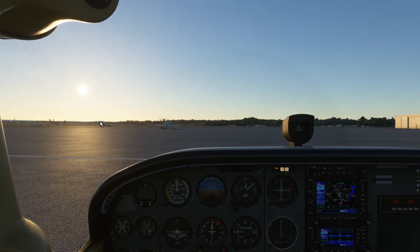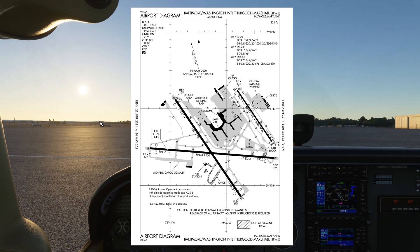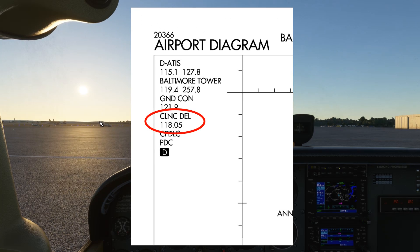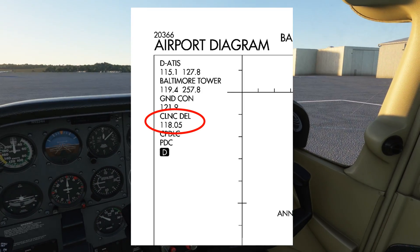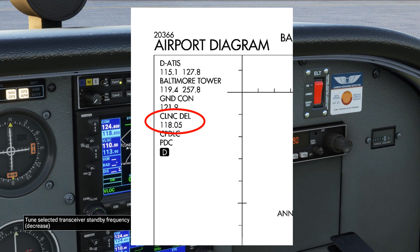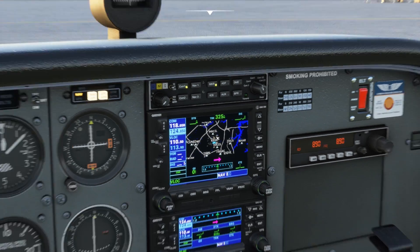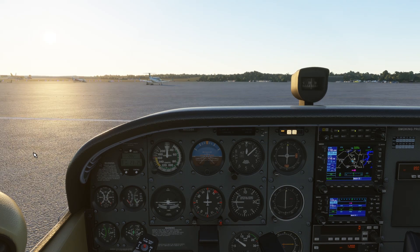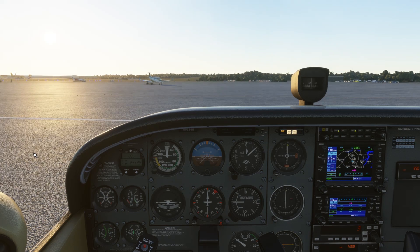Now that we've got that figured out, we need to find the clearance delivery frequency — which controller to talk to for our IFR clearance. Looking at the taxiway diagram for BWI, up in the top left is the list of frequencies. We're looking for the one that says clearance delivery. We'll take that frequency and set it into our radio, listen for a moment to make sure nobody else is talking, and then request our IFR clearance.